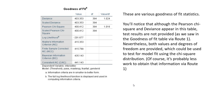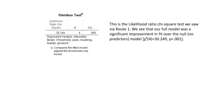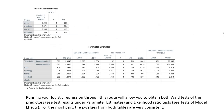First, we have a table of various goodness of fit measures. Although the Pearson chi-square and deviance appear in this table, test results are not provided as they were via Route 1. Nevertheless, both values and degrees of freedom are provided, which could be used to test model fit using the chi-square distribution — though it's less work to obtain those results via Route 1. This is the likelihood ratio chi-square test we saw via Route 1, and again our full model was a significant improvement in fit over the null. We also have likelihood ratio chi-square tests associated with each predictor variable, as well as Wald chi-square tests of the regression coefficients for each predictor.